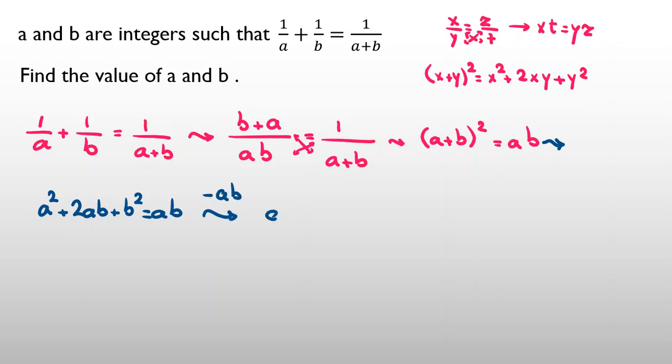Now, let's subtract ab from both sides: it will be a² + ab + b² = 0.